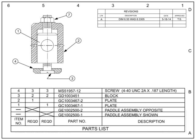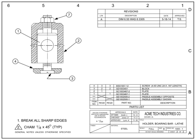An X will indicate the appropriate quantity column per assembly. For the assembly labeled Paddle Assembly Shown, the quantity column is on the right. The quantity column for the Paddle Assembly Opposite is on the left. In summary, blueprints are the way in which technical ideas and information are communicated, from the design team to the technicians and manufacturers tasked with implementing the design.